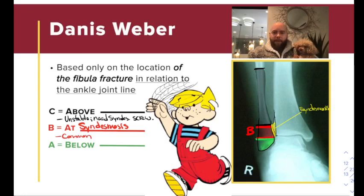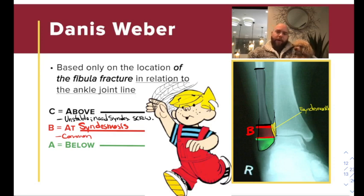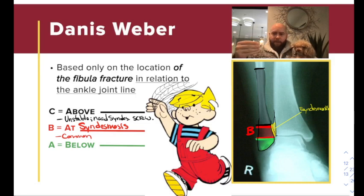This is the Danis-Weber classification of fibular fractures. To remember it, I have Dennis the Menace here — he's an old-timey cartoon. He's holding a little spider webby thing, which I've used to represent the tibiofibular syndesmosis, or the ankle syndesmosis. The classification is based on either the level of the ankle joint or the ankle syndesmosis — more commonly now, the ankle syndesmosis is used. I've highlighted that with the yellow cross-hatching. It's an interosseous syndesmosis that connects the tibia and the fibula together.